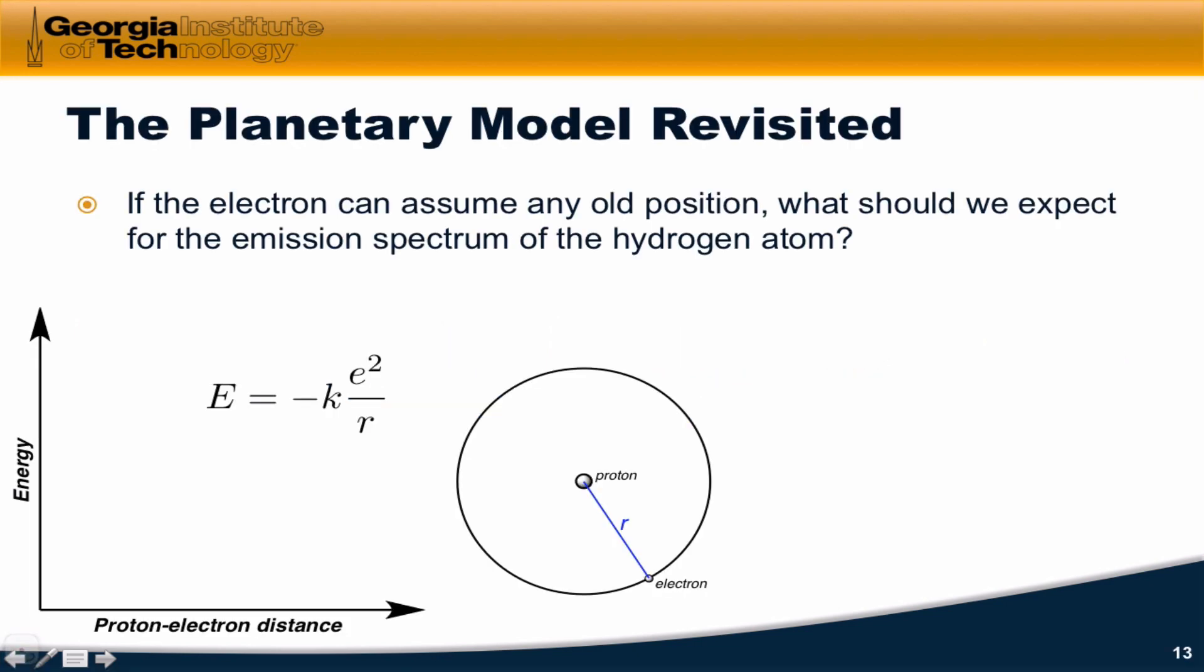So let's think again about the planetary model and about our picture from before that said that the energy of the electron is inversely proportional to its distance from the nucleus, and so it asymptotically approaches zero as we move to higher and higher distances. If the electron is able to assume any old r value, what should we expect for the spectrum of the hydrogen atom?